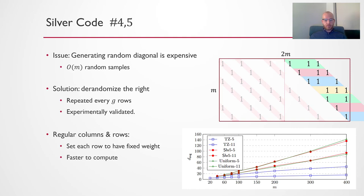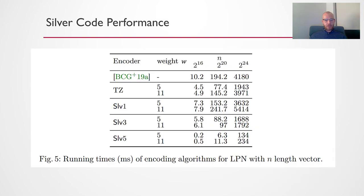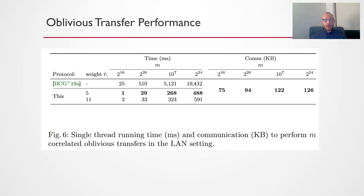The other point of optimization that we considered is the running time of our codes. So shown here at the bottom is our final code silver 5, the weight 5 variant of it takes 1.13 seconds to encode a vector of 16 million. You can compare this to the work of Boyle et al which use quasi-cyclic codes which takes four seconds for the same operation or the TZ code which takes two seconds. So you can see it's a very significant order of magnitude improvement over the state of art. While when applying this to our oblivious transfer protocol you can see that this significantly improves the performance. So our protocol is basically the same protocol as the Boyle et al one shown here but with our code replaced and you can see this reduces the running time from 10 seconds to half a second for 16 million OTs and we achieve the same sublinear communication.